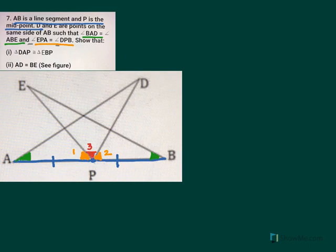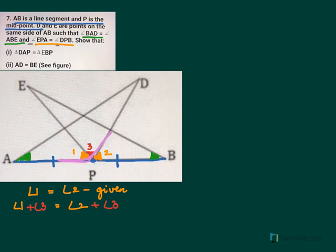We start with angle 1 equal to angle 2, which is given. Now we add angle 3 on both sides. So we have angle 1 plus angle 3 equal to angle 2 plus angle 3.